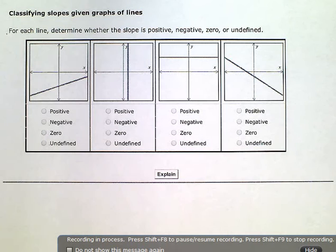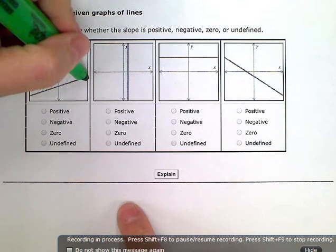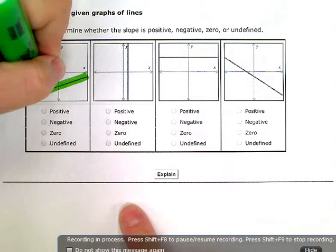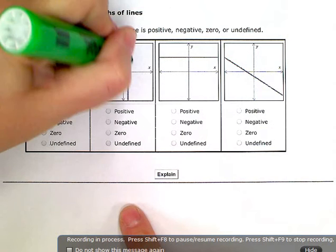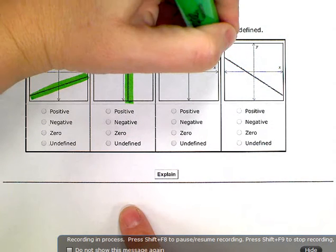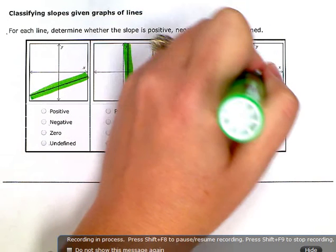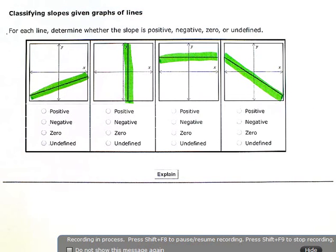If I'm looking at these graphs here, the dark line is the line that we're looking at, the lighter ones are just the x and the y-axis. So I'm looking at these dark lines here to determine which type of slope it is.